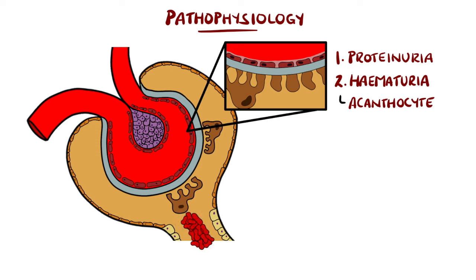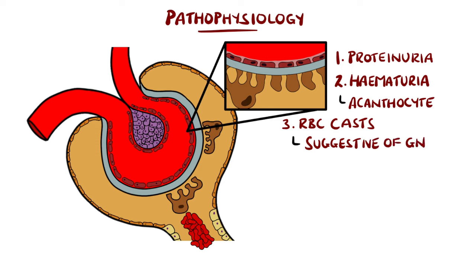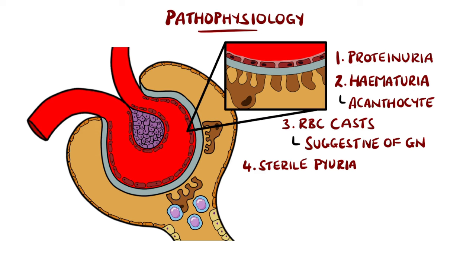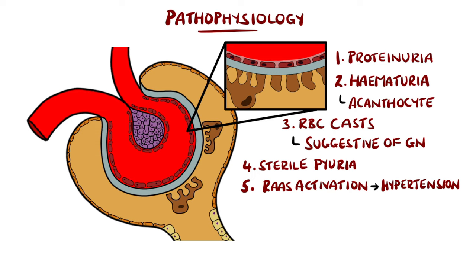Red blood cells can also clump together within the tubules, forming cylindrical structures called casts — this is considered suggestive of glomerulonephritis. The injury and inflammation means white blood cells are recruited and can pass into the urine, termed sterile pyuria because there is no bacteria present. As the glomerular filtration rate falls, the renin-angiotensin-aldosterone system can be activated, leading to sodium retention and hypertension. The reduced urine output is also the result of a reduced glomerular filtration rate.